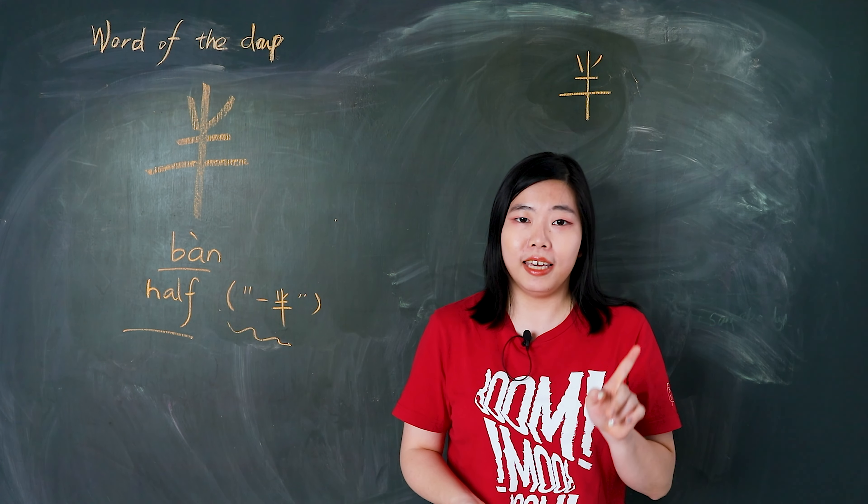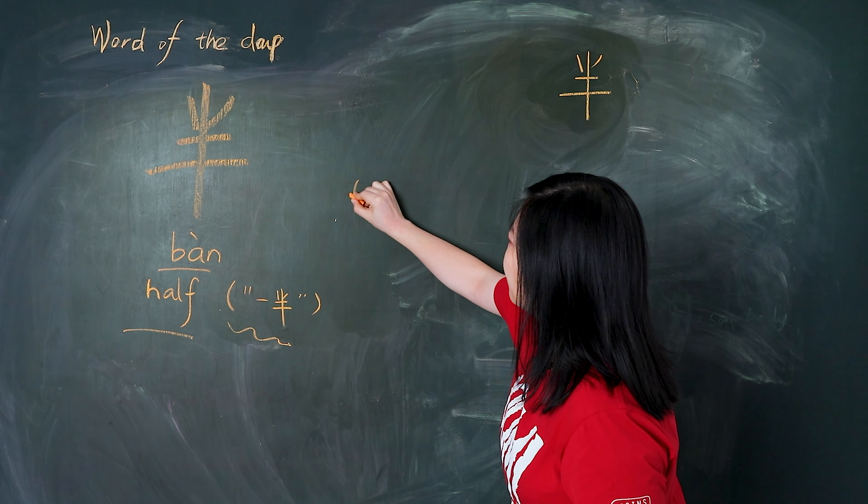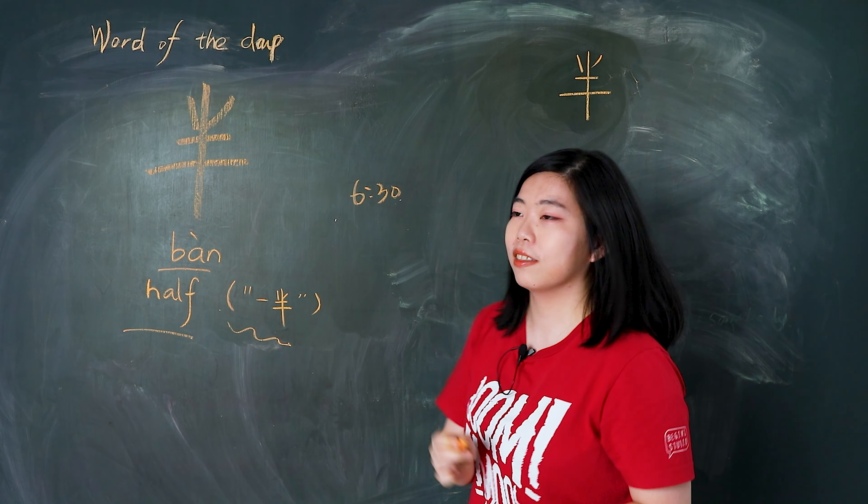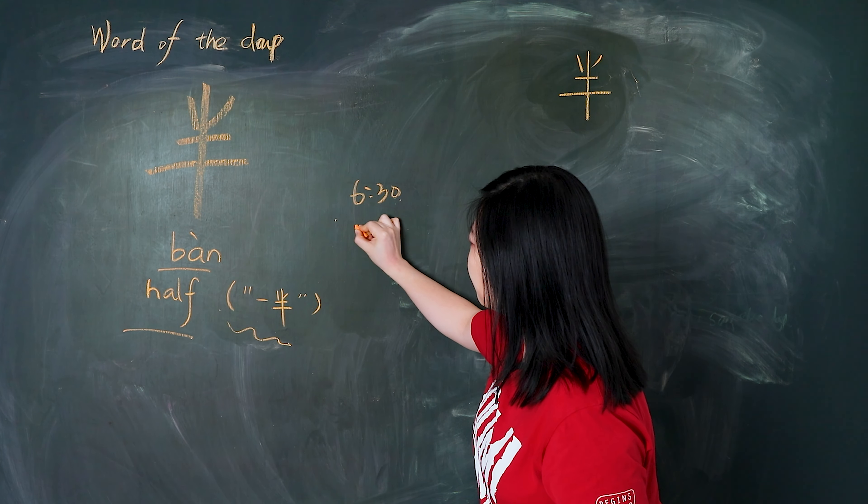Always say 半个蛋糕. But here we need to pay attention. If you want to express time, like 6:30, we can say 六点半.